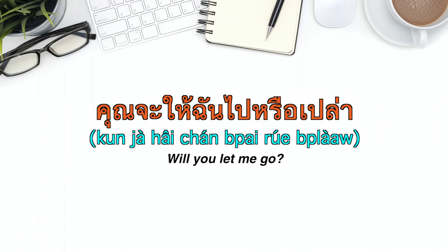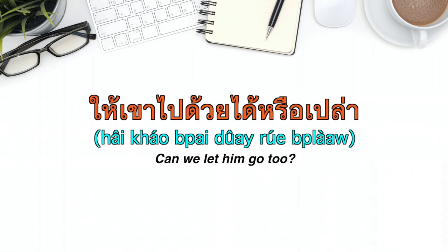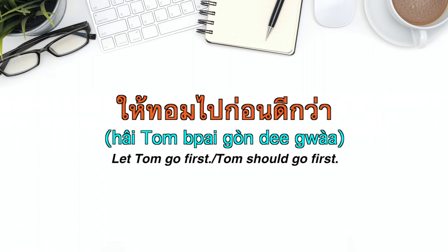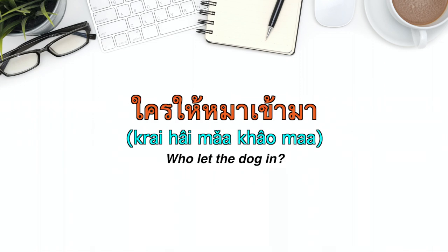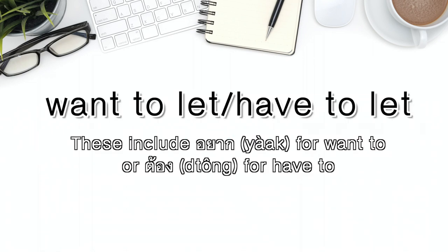ให้เขาไปด้วยได้รึเปล่า (hai kao bpai duoi dai rue brao) — 'Can we let him go with us?' ให้ทอมไปก่อนดีกว่า (hai tom bpai koon dee kwa) — 'Let Tom go first' or 'Tom should go first.' ใครให้มาเกียวมา (krai hai maa keau maa) — 'Who let them get involved?'